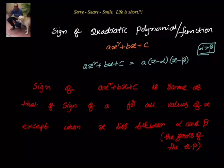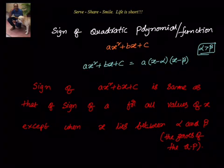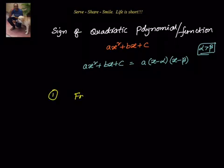Now, how to find out the sign of a quadratic function — what are the steps? The sign of ax² + bx + c is the same as the sign of a for all values of x, except when x lies between alpha and beta. When x is between alpha and beta, the sign is minus of a; otherwise it equals the sign of a. The first step is to find the zeros, that is alpha and beta.